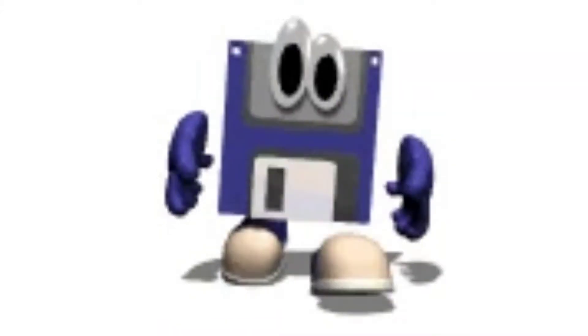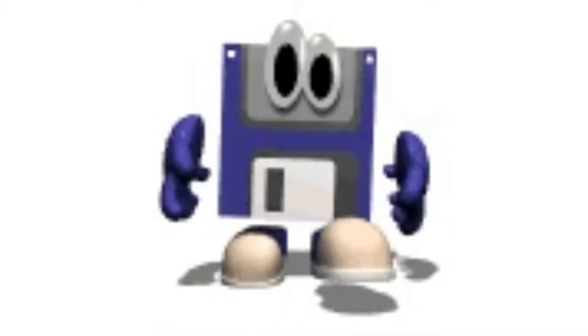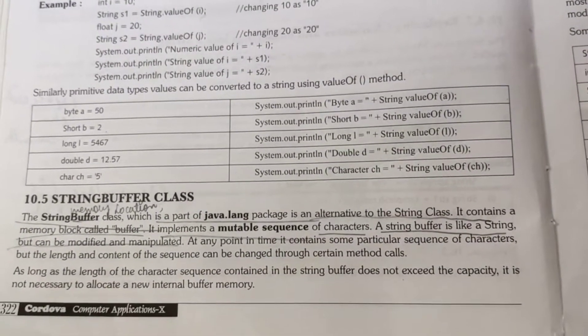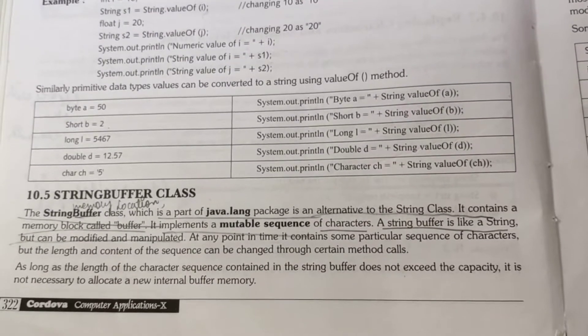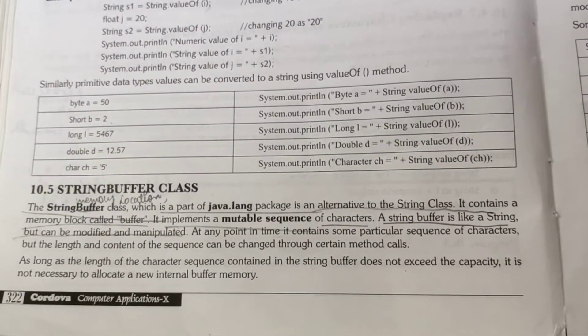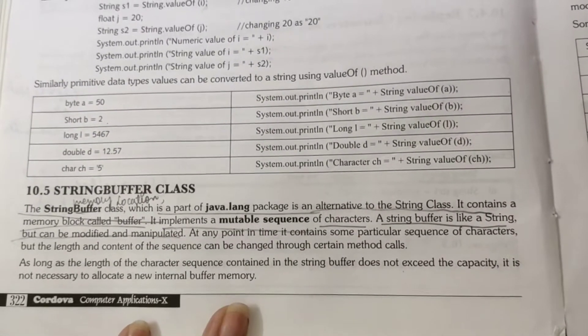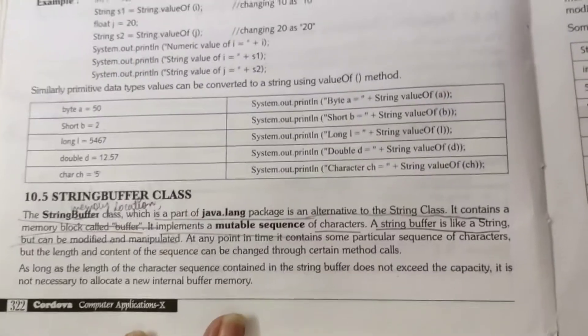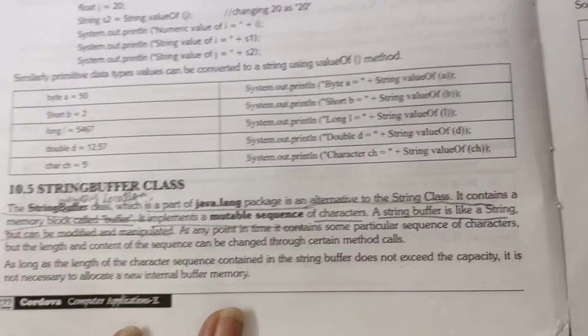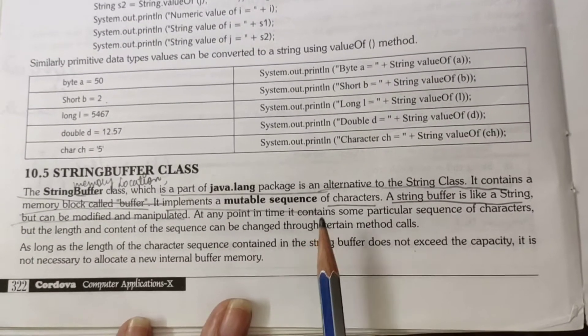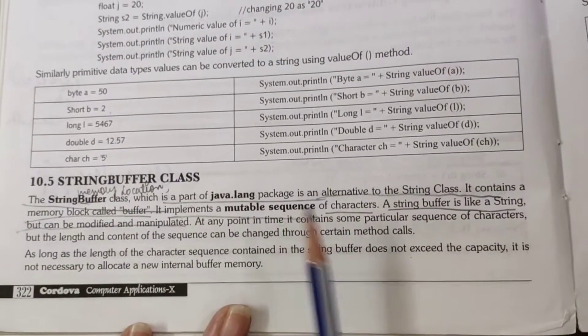Welcome back to your Computer Application class, Class 10. In this part of the video we will discuss the StringBuffer class, accessor methods of the StringBuffer class, and the difference between String and StringBuffer class. StringBuffer class is a part of the java.lang package and is the alternative of the String class. It contains a memory block called a buffer and it is mutable, meaning the value of the object can be changed.